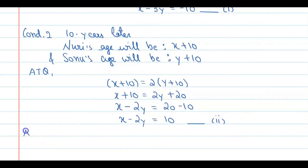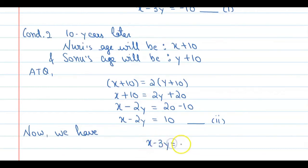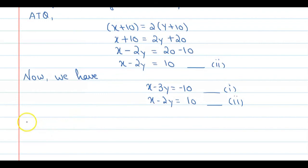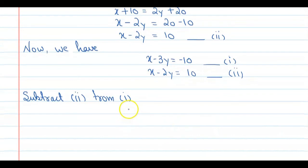Now we have two equations. Equation 1: X minus 3Y equals minus 10. Equation 2: X minus 2Y equals 10. We can directly subtract to eliminate the X terms. Let's subtract Equation number 2 from Equation number 1. Writing them: X minus 3Y equals minus 10, and X minus 2Y equals 10.